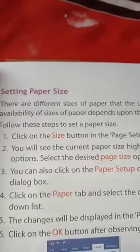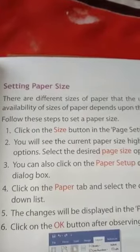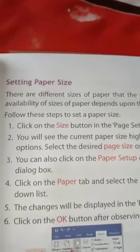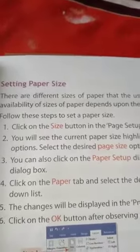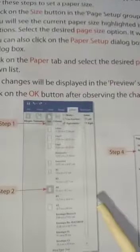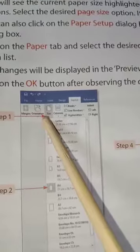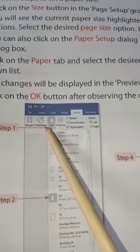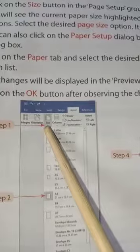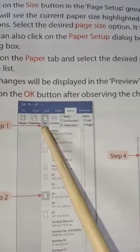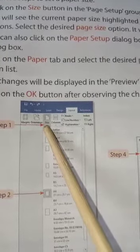In Word 2016, it depends upon the type of printer used. Follow the steps to set up paper size. Click on the Size button in the Page Setup group of the Layout tab.